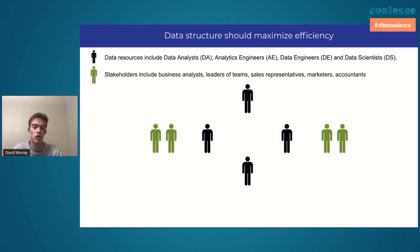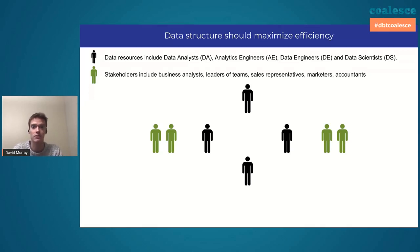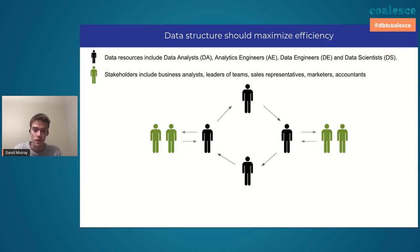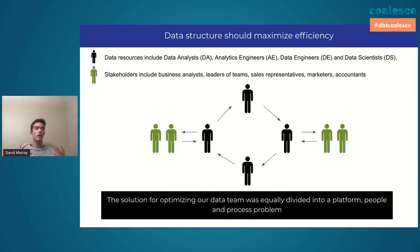Generally, those are the people making business decisions or serving clients or talking to suppliers. When I talk about data team structures existing to maximize efficiency, I mean how do we organize our data resources so that they can help those stakeholders in the best way possible and also help each other? And when we were exploring this, what we found out was that really the problem is threefold.